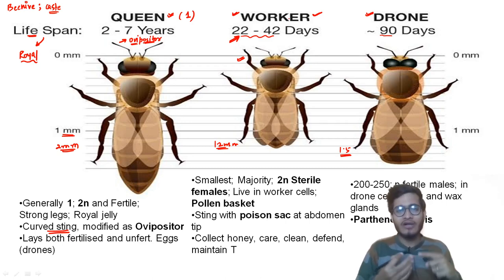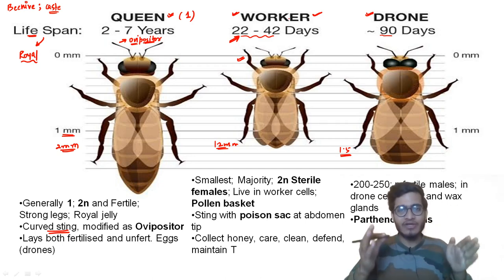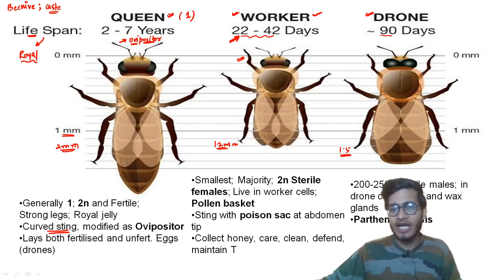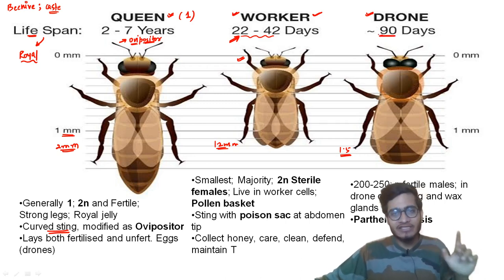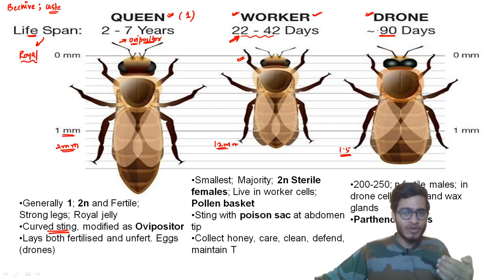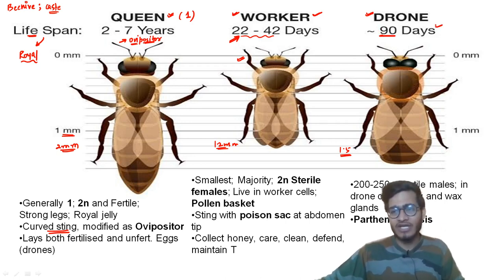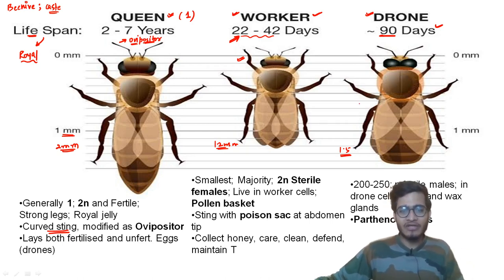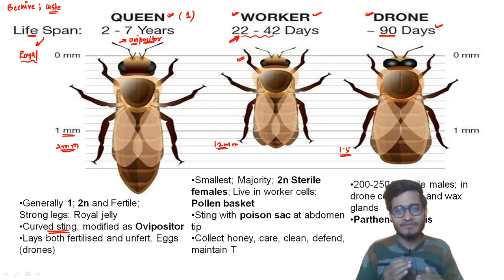The queen has the best of everything: maximum size, feeds on royal jelly, is singular in the entire beehive, has curved stings working as ovipositor, and has the maximum lifespan. For the drone, its lifespan is around 57 days to two months in some books, and three months in others. It is mediocre in size — smaller than the queen but slightly larger than the worker.